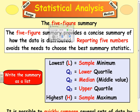In this lesson, we're going to look at something called the five-figure summary and box plots. The five-figure summary provides a concise summary of how the data is distributed. Reporting five numbers avoids the need to choose the best summary statistic, like averages - for example, there's a mean, mode, and median. You have to choose which one to use. This gives you lots of information and eventually you can draw a diagram called a box plot with this.